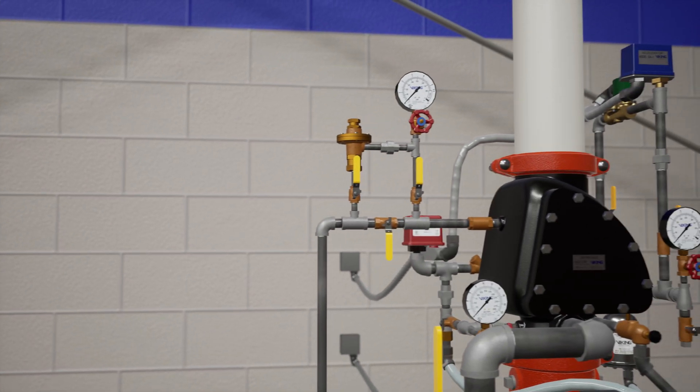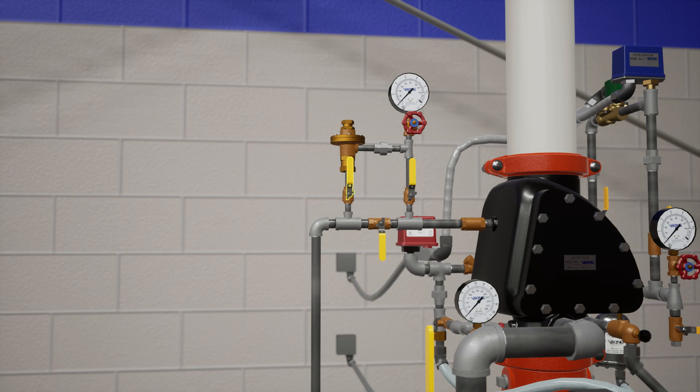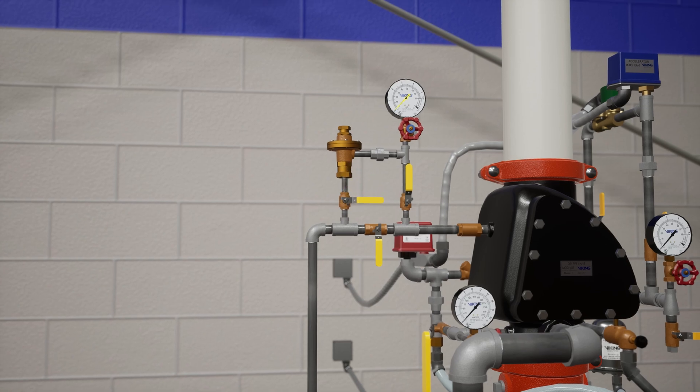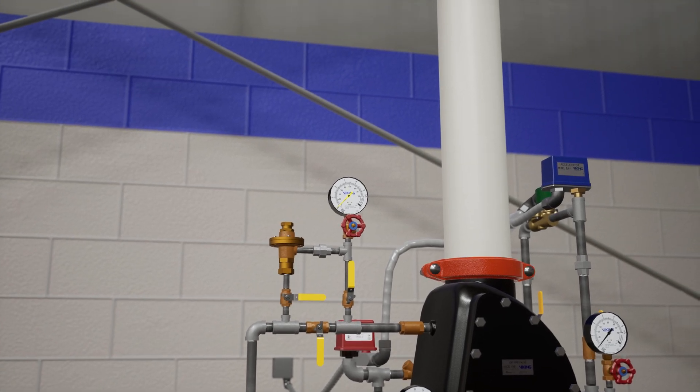Next, shut off the air supply to the system by closing the quarter-inch isolation valve before the air pressure maintenance device and verify there is no pressure showing on the air supply pressure gauge.